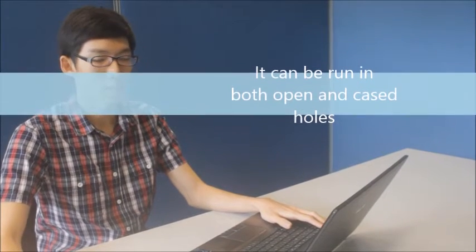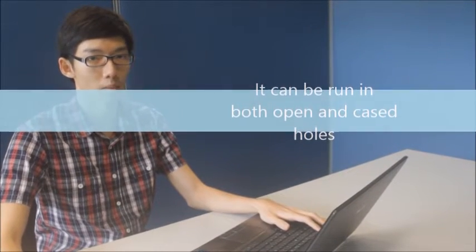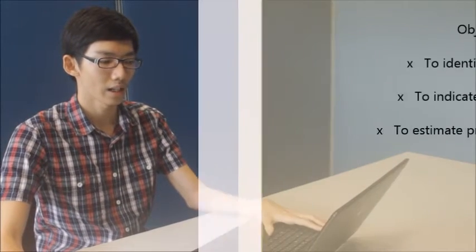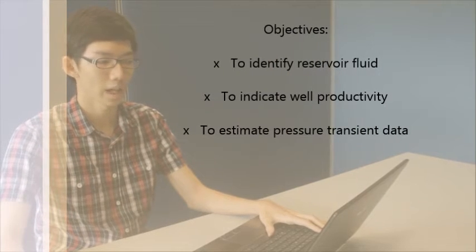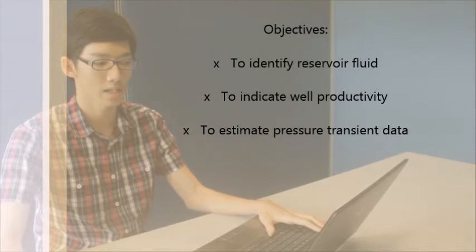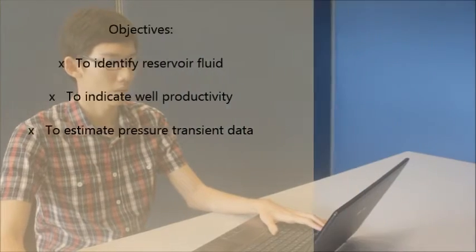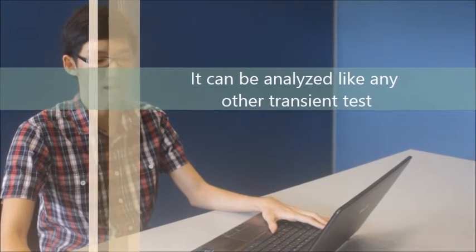DST can be run in both open and cased holes with single or dual packer, which we will further discuss later. The objectives of DST include identifying the reservoir fluid, indicating the well productivity, and obtaining pressure transient data for permeability, skin factor, and static reservoir pressure. We can estimate and analyze all these data using semi-log plots and derivative type curves, just like any other transient test.